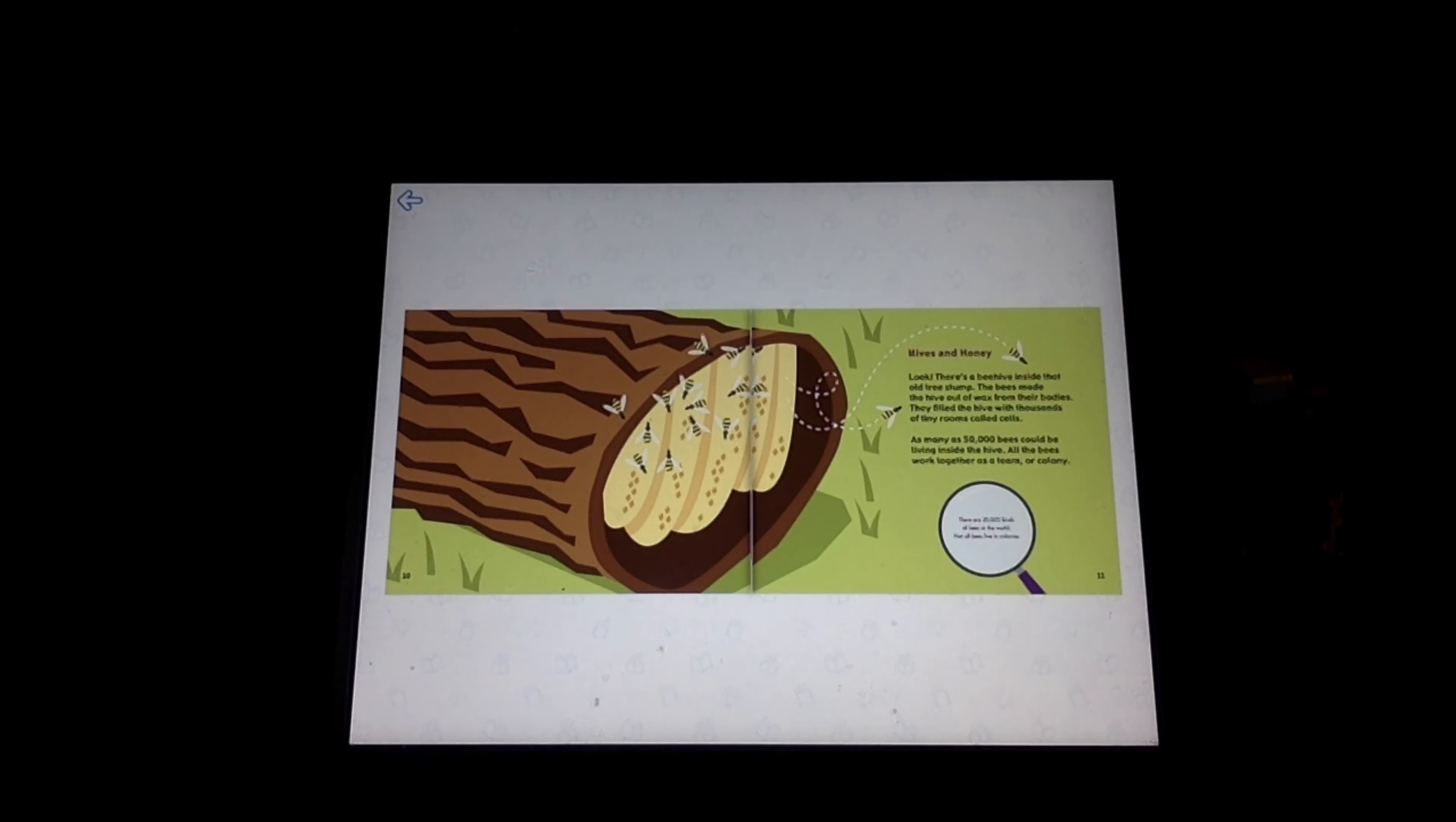Hives and honey. Look, there's a beehive inside that old tree stump. The bees made the hive out of wax from their bodies. They filled the hive with thousands of tiny rooms called cells. As many as 50,000 bees could be living inside the hive. All the bees work together as a team or colony.